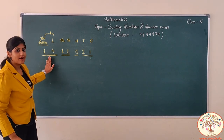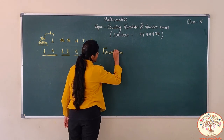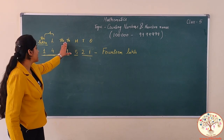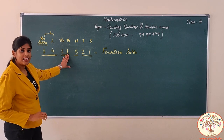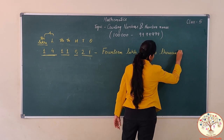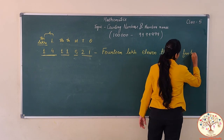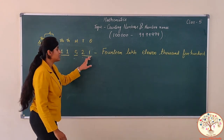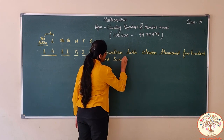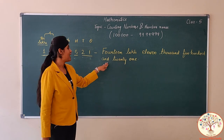1 and 4 makes 14, and 14 is from the lakhs place value, so the number name will be 14 lakhs. Now continue with the thousands place as you have already learned. Both thousands digits are read together — 1 and 1 makes 11, so it will be 11 thousand. Then how many hundreds? Five hundreds. And tens and ones we read together: 2 and 1 makes 21. So the number name for this 7-digit number will be 14 lakhs, 11 thousand, 5 hundred and 21.